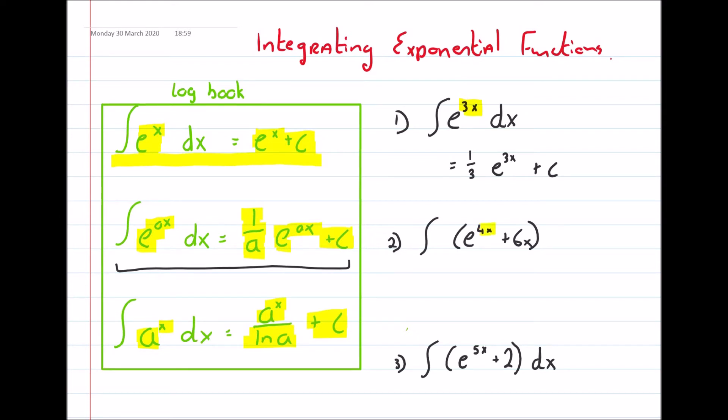It's 4x. So we will have, in the first instance, 1 over 4, multiply by e to the 4x. So that's the first bit done.